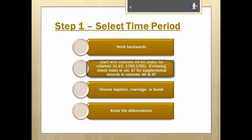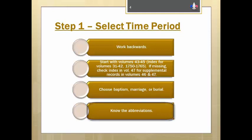If you don't find your ancestor there, don't forget to check the index in volume 47 for the supplemental records found in volumes 46 and 47. Then decide whether you're looking for a baptism, marriage, or burial record.